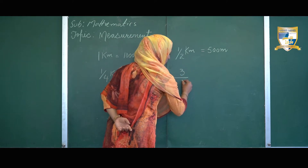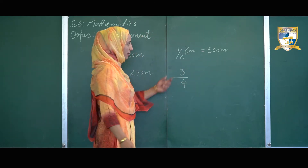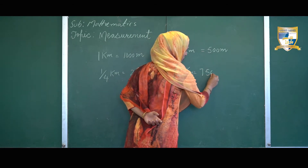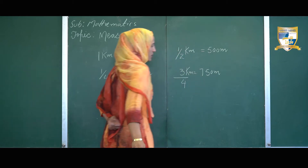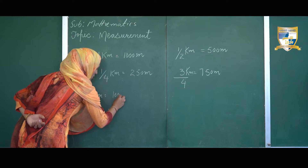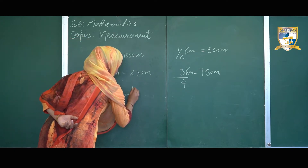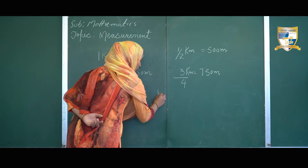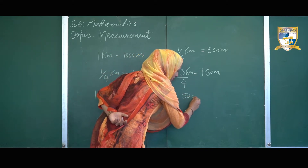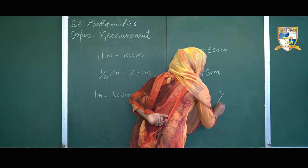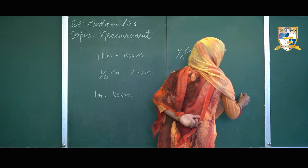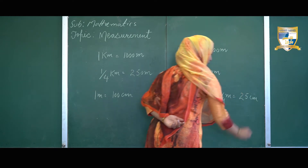Three fourths of a kilometer equals 750 meters — out of four parts, three parts equal 750 meters. Similarly, one meter is equal to 100 centimeters. Half a meter is equal to 50 centimeters, and one fourth of a meter is equal to 25 centimeters.